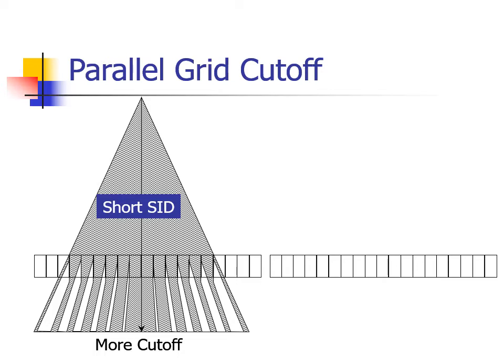As we move away from the center of the grid, the peripheral rays angle to the point where they are stopped by the lead strips of the grid. This is grid cutoff.